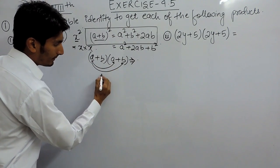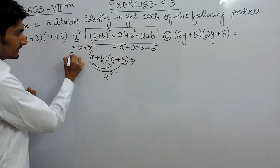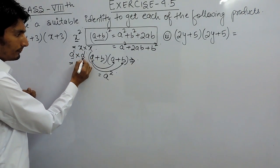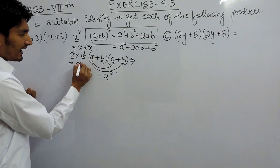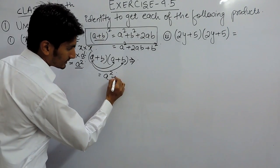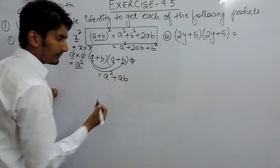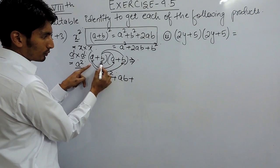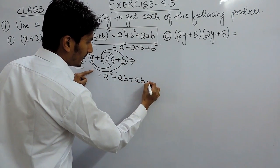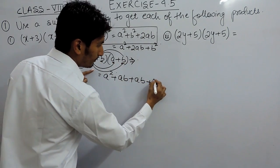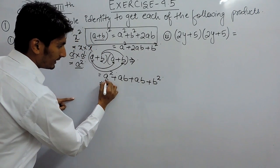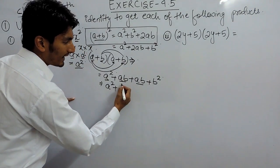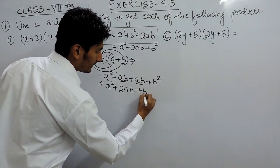You multiply a with a, giving a square, because when bases are the same and you multiply, the powers get added. Then a multiplied with b gives ab. Similarly, b multiplied with a gives ab again, and b multiplied by b gives b square. Since ab and ab are like terms, 1ab plus 1ab gives 2ab. So the result is a square plus 2ab plus b square.